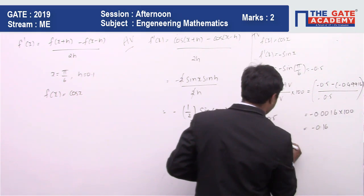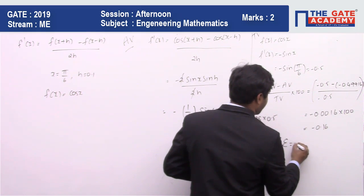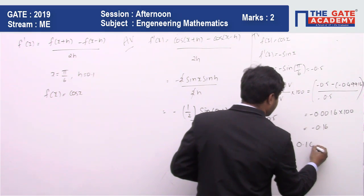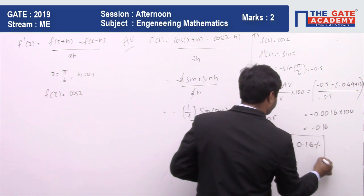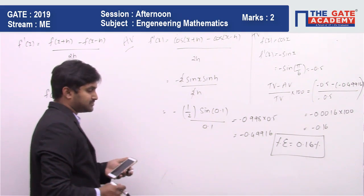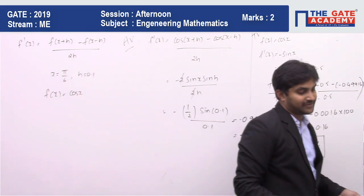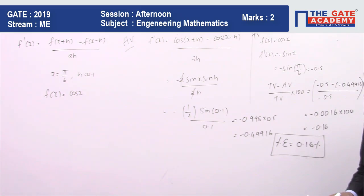So if you see the error, only the magnitude of the error, then it is going to be 0.16 percentage.